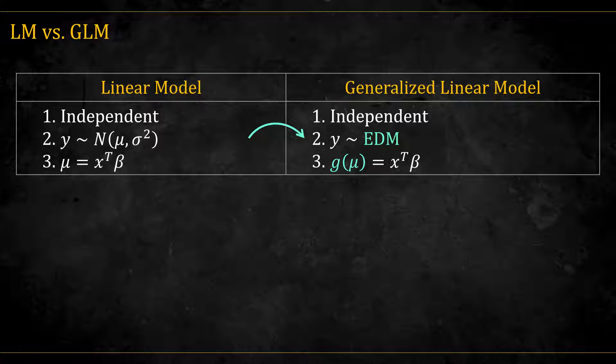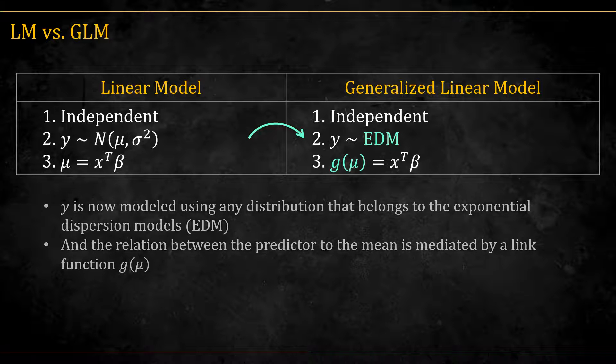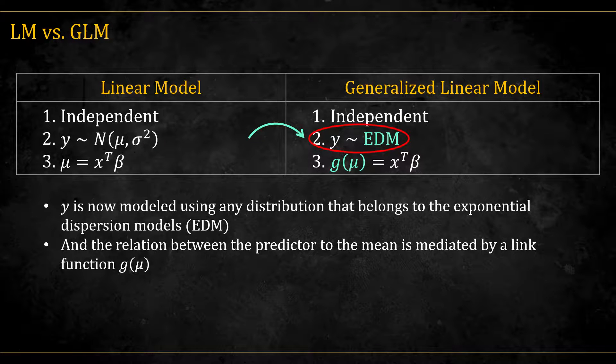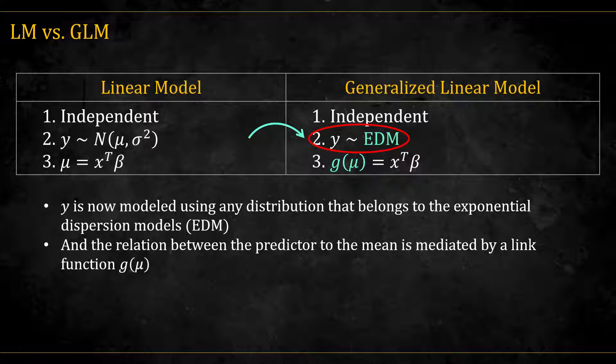Generalized linear models change two of these assumptions. Y is now modeled using any distribution that belongs to the exponential dispersion models, EDM. EDM is a subset of the larger exponential family that can be modeled by GLMs. And the relation between the x's to the mu's is mediated by a link function, g, such that g of mu is equal to the linear predictor, x beta.